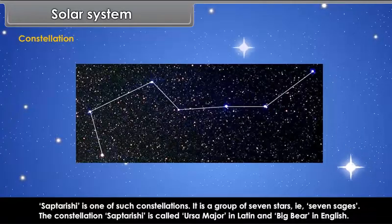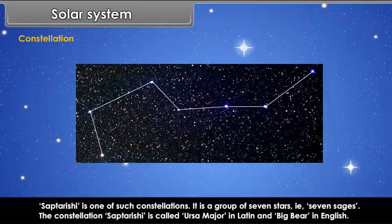It is a group of seven stars, that is, seven sages. The constellation Saptarashi is called Ursa Major in Latin and Big Bear in English.